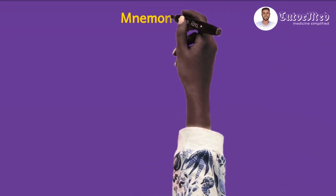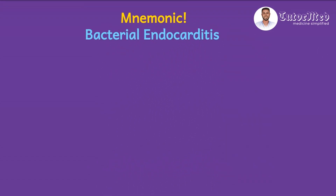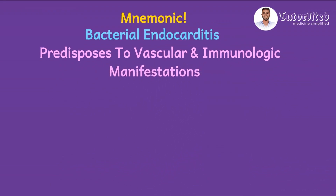On this slide, let's look at the mnemonic we would use to remember the components of the modified Dukes criteria. Kindly pause here and like this video, share it, and subscribe to our channel if you have not done that yet. Hit the notification bell to get notified when we post new videos. And so, to our mnemonic: the first two words represent the major criteria, while the last five words represent the minor criteria.